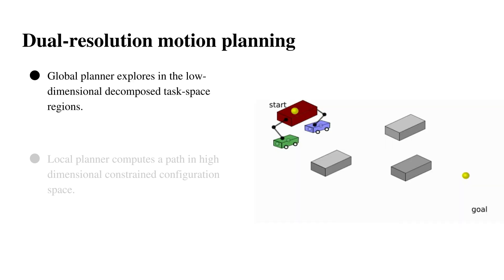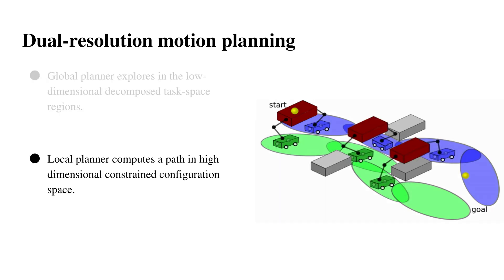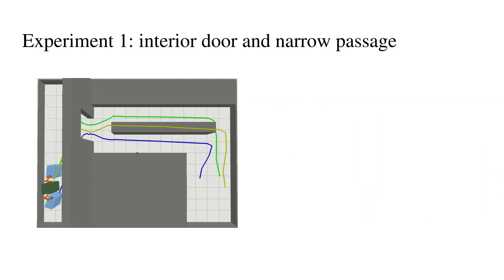First, as shown in the animation, we have a low-resolution global planner that explores in the lower-dimensional decomposed task space regions from start to goal. Then, another local planner completes the task by computing a path in high-dimensional constrained configuration space.